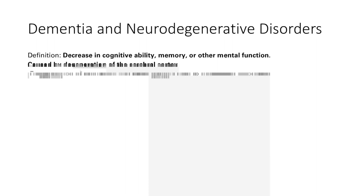Dementia and neurodegenerative disorders. Neurodegenerative disorders often present with dementia, which I would define as a decrease in cognitive ability, memory, or other mental functions. These symptoms are based on degeneration of the cerebral cortex. Neurodegenerative disorders can have degeneration in the cerebral cortex where brain cells stop working, but also in the deeper structures of the brain including the basal ganglia, leading to movement problems.